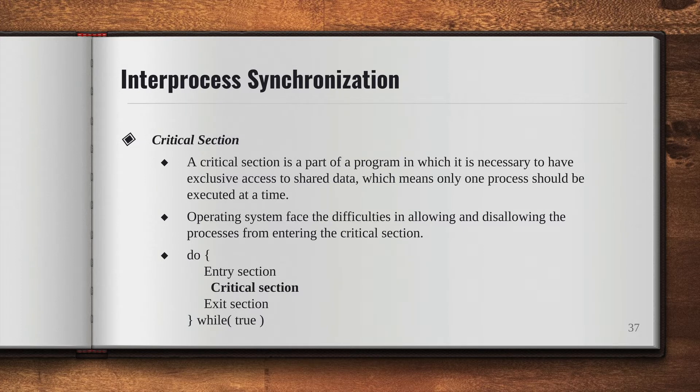So just take a look at this. Let's say we have a condition — while the condition is true, you have an entry section where the process enters the critical section. It gets executed in the critical section where it's supposed to have exclusive access to the shared data, and then it exits the critical section.